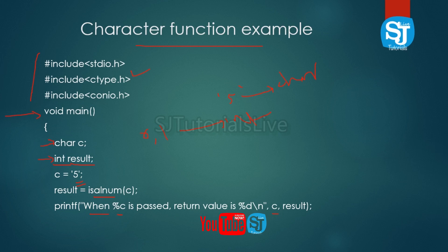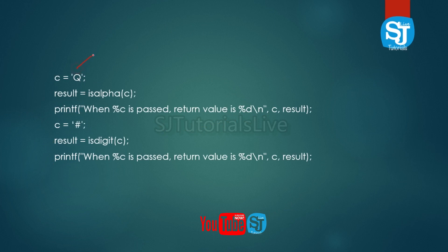When '5' is passed, the return value is 0 because it is not an alphabet — it is a number. When 'q' is passed, the return value is 1 because q is a positive alphabet character.